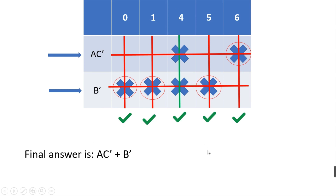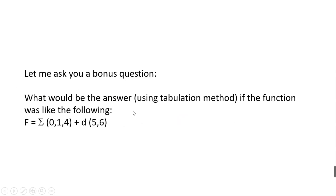Here's a bonus question: how would you solve using the tabulation method if the function had minterms 0, 1, 4 and don't-care terms 2, 5, and 6? In our solved example there were no don't-care terms, but you should be able to handle this since we have already completed tutorials on tabulation with and without don't-cares. Best of luck, and thank you very much for watching this tutorial.